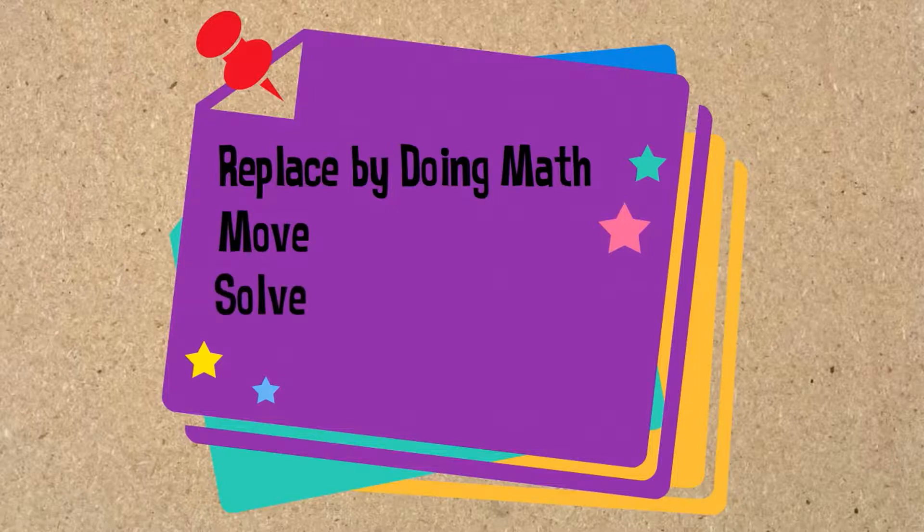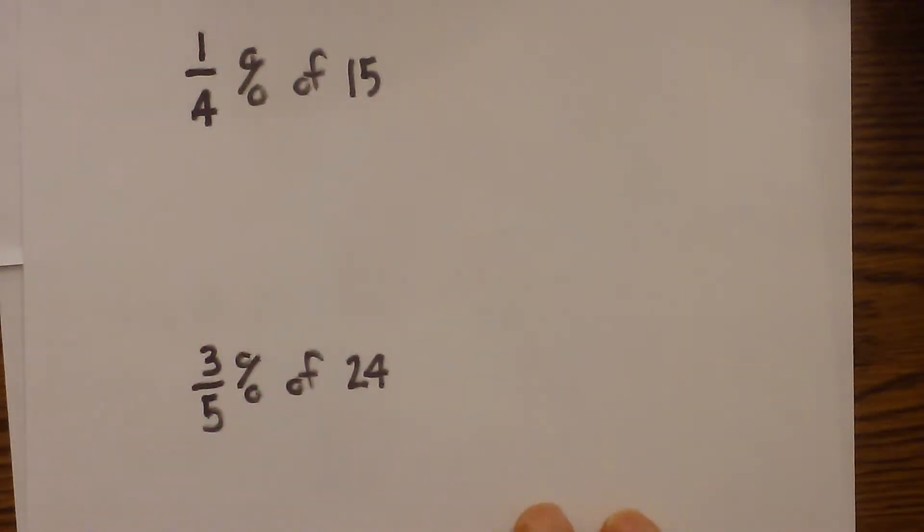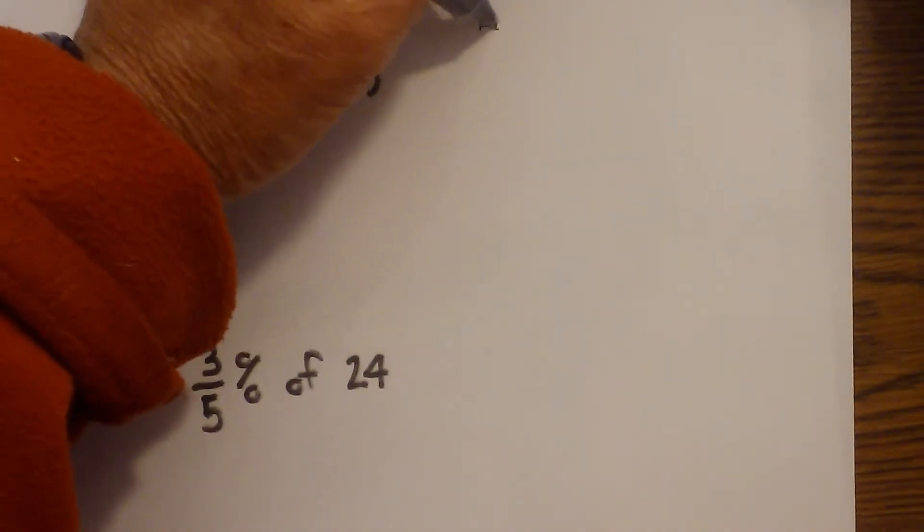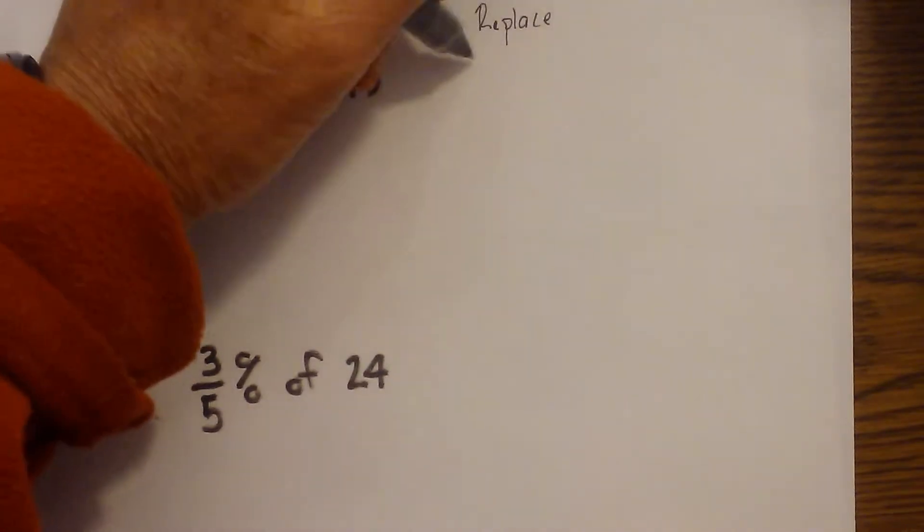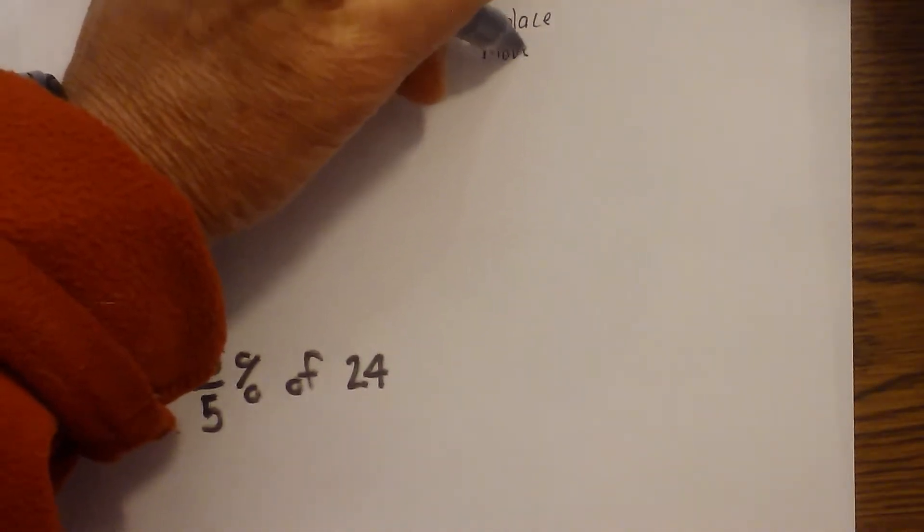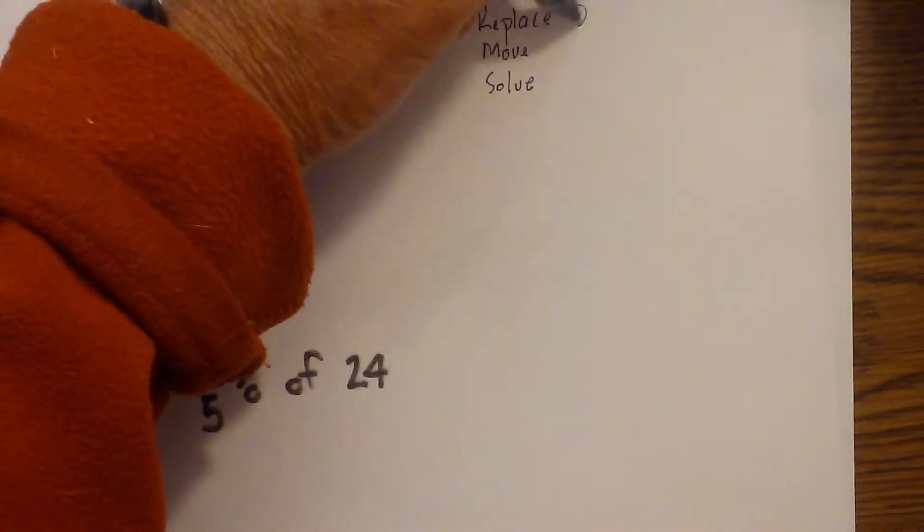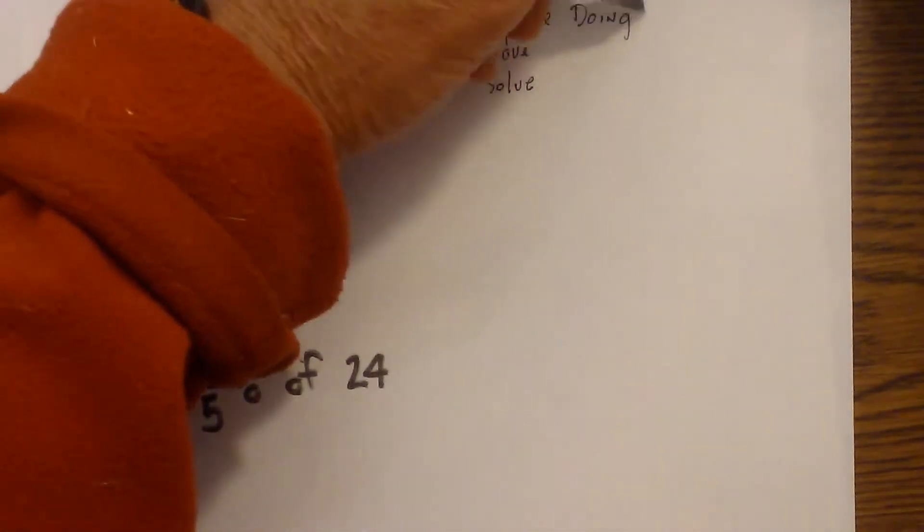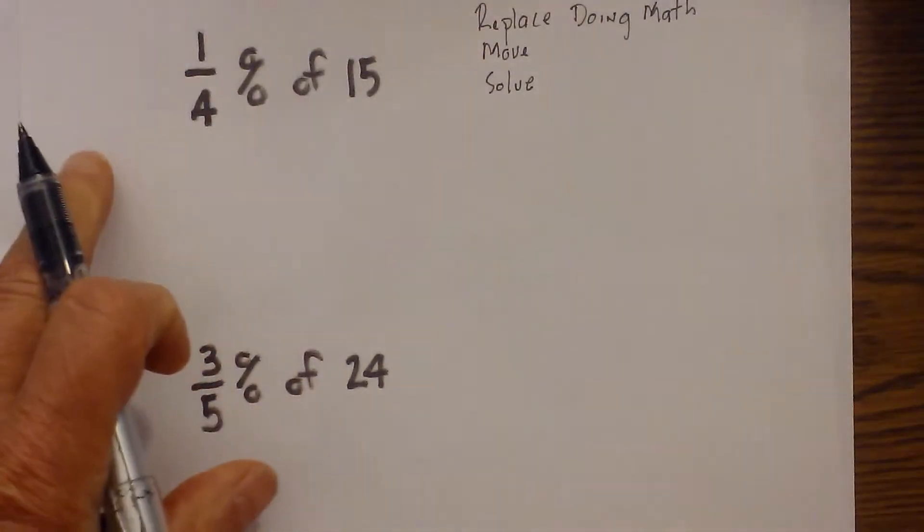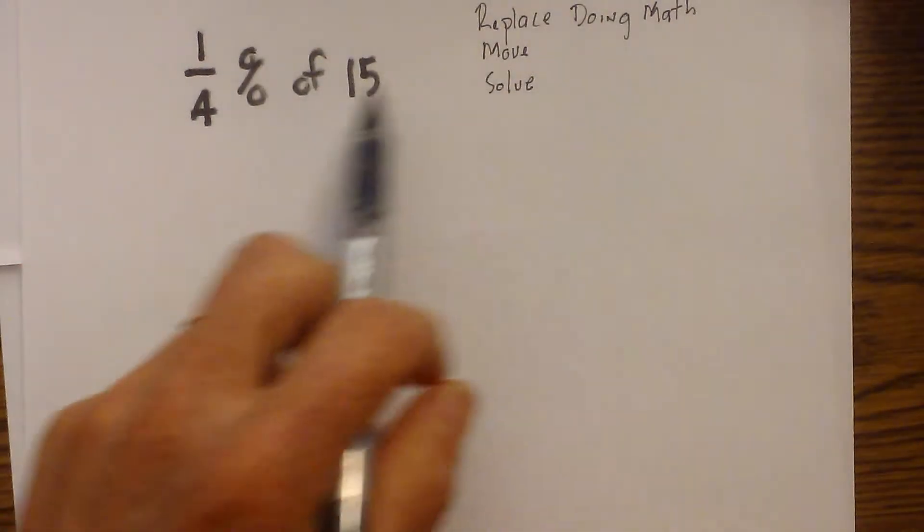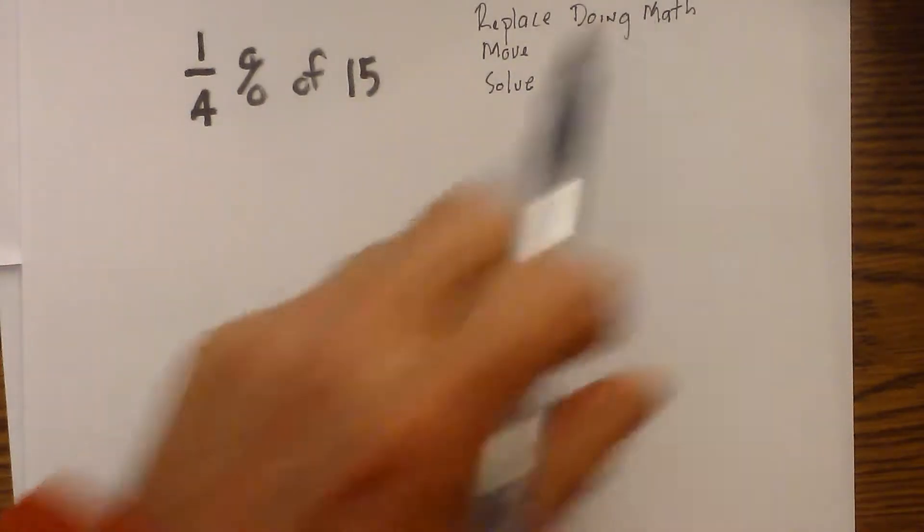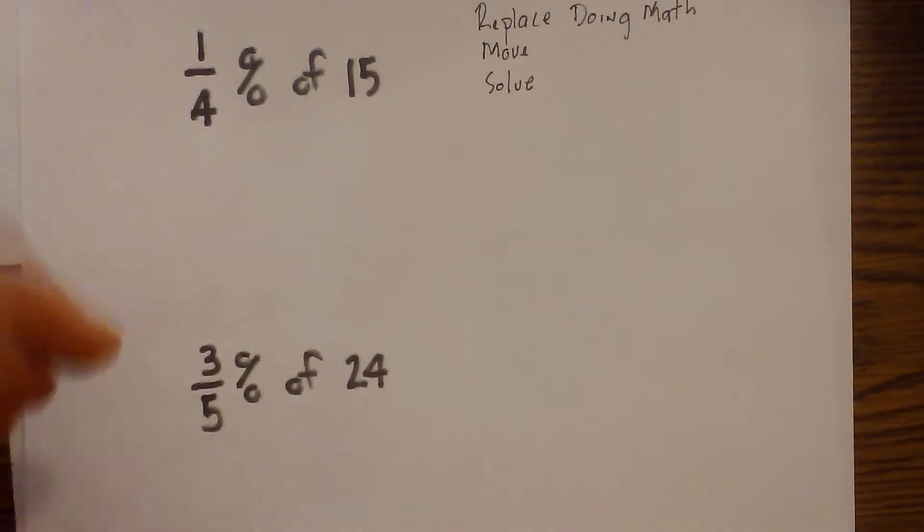Let's look at a couple example problems using this mnemonic device. You may encounter a problem like this where you need to find a fractional percent of a number. Again, you can use replace, move, and solve. Remember, you replace by doing math. So you replace the percent with a decimal and you replace the of with a multiplication sign. So let's get started.